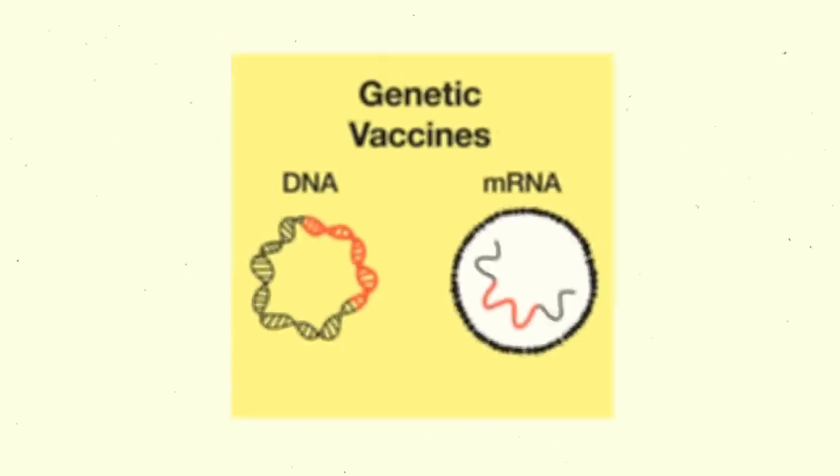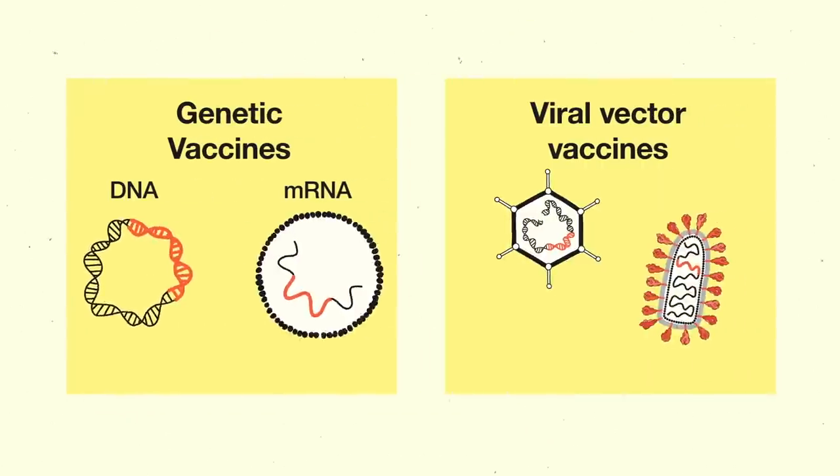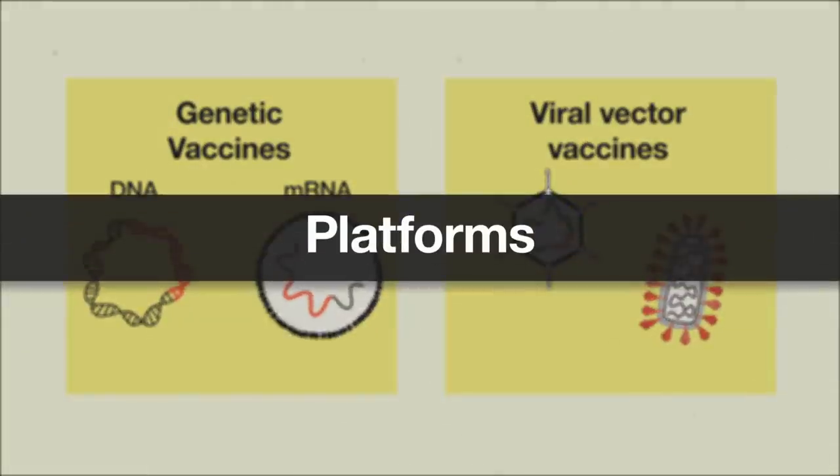These new technologies are genetic vaccines and viral vector vaccines. These platforms have been in development for decades. A lot of the investment has specifically focused on their potential to help combat emerging infectious diseases, and COVID-19 is putting that potential to the test. Let's take a look at how they work and how they're different from more conventional vaccines.